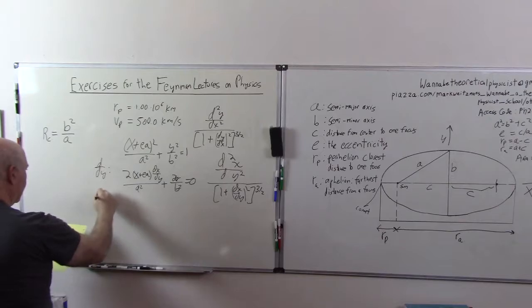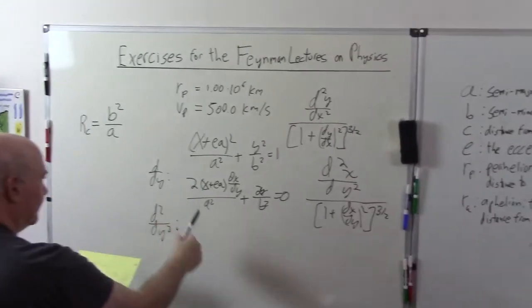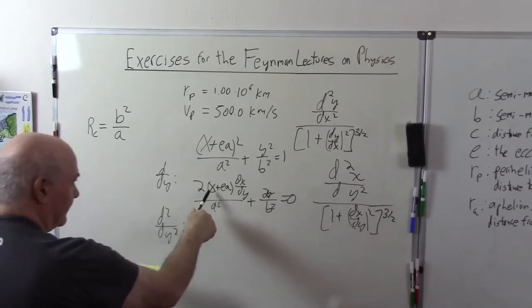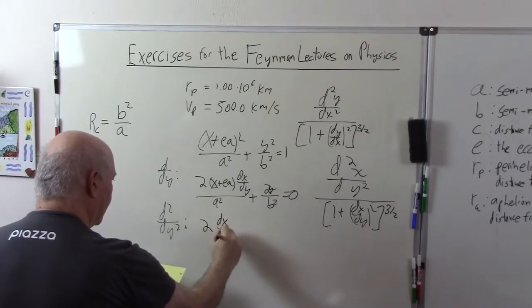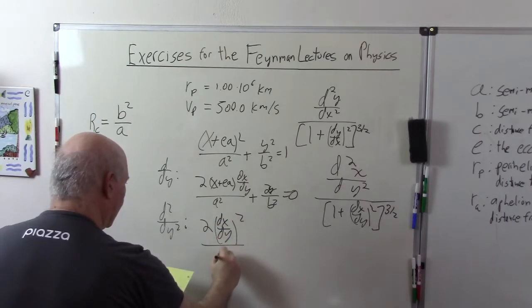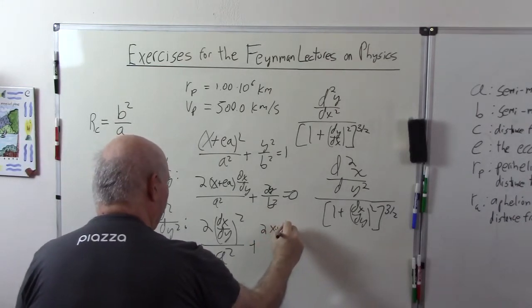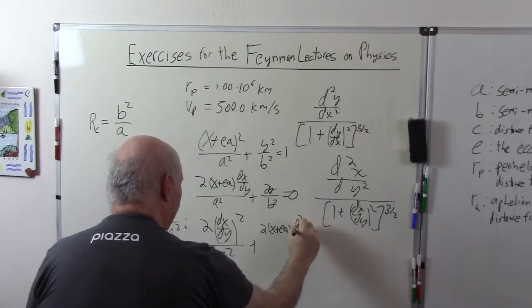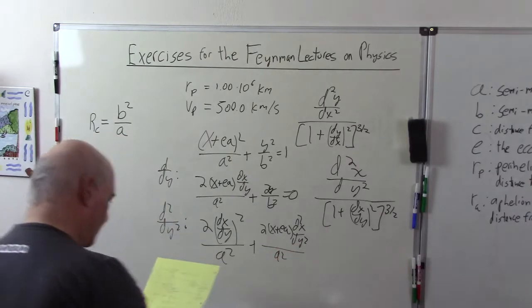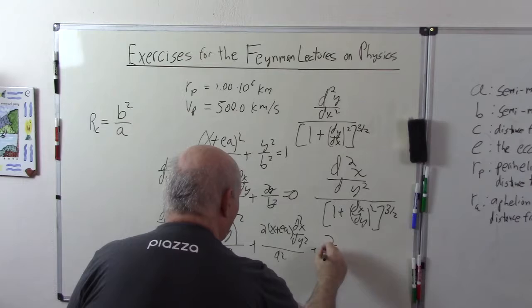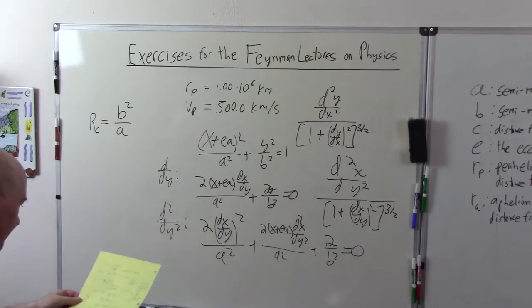Now let's take another derivative. So this is the first term. We're going to get 2, taking the derivative of this is going to be dx dy, and then we're multiplying by dx dy, so that's squared. 2 times dx dy squared over A squared plus 2 times X plus EA times d2x dy2 over A squared plus 2 over B squared equals 0. So that's our basic equation.